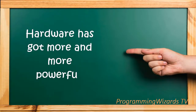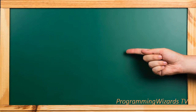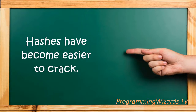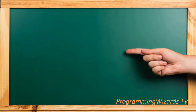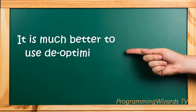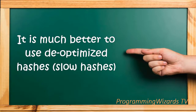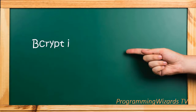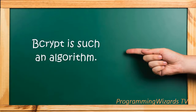Due to the recent increased prevalence of powerful hardware, such as modern GPUs, hashes have become increasingly easy to crack. A proactive solution to this is to use a hash that was designed to be de-optimized. Crypt is such a hashing facility.